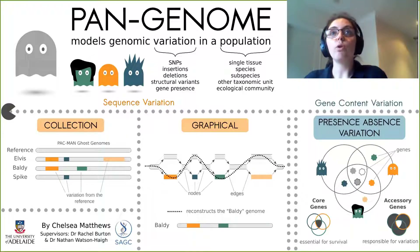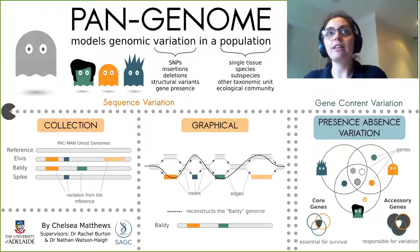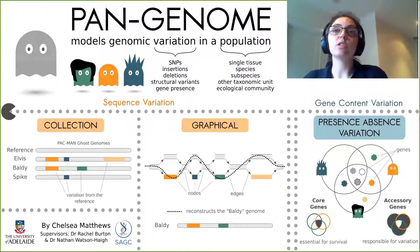The core genome is thought to be mainly made up of genes necessary for survival, while the accessory genome contains genes associated with variations in lifestyle and evolutionary trajectories. Presence-absence variation pangenomes are very well suited to linking phenotype with genotype, and can also be used in species delineation.